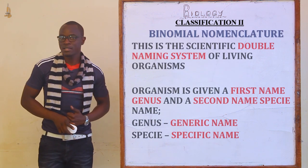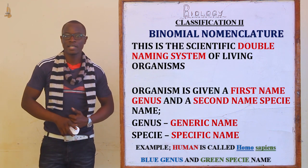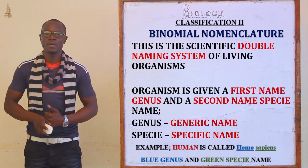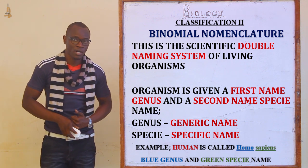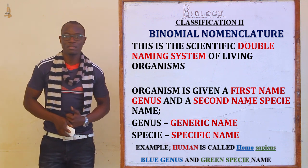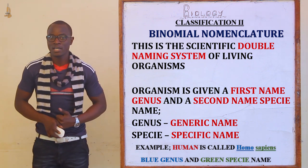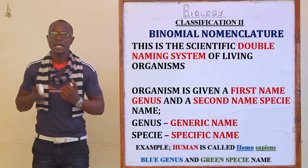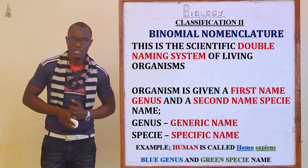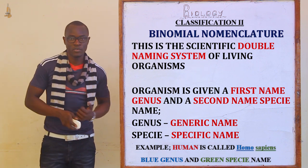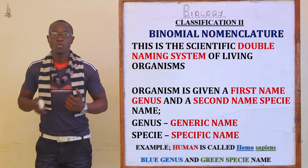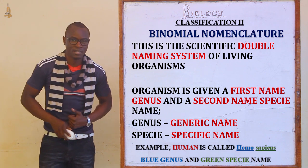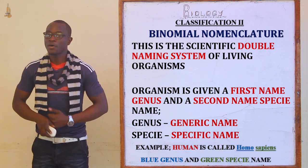Let's also remind ourselves what binomial nomenclature is. Binomial nomenclature is defined as the scientific double naming system of living organisms, whereby the organism is given a genus name and a species name.